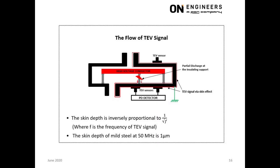This slide shows the propagation of the TEV signal at the metal surface of electrical assets — for example, the metal enclosure of an AIS. The TEV signal is of high frequency and is subjected to skin effects; it flows only at the surface area of the metal.